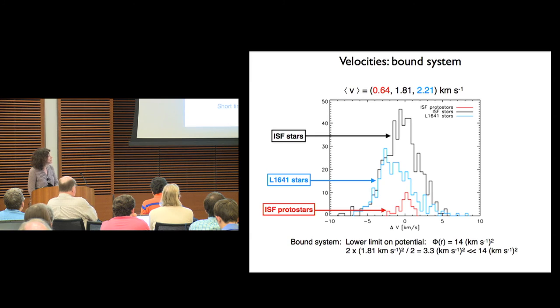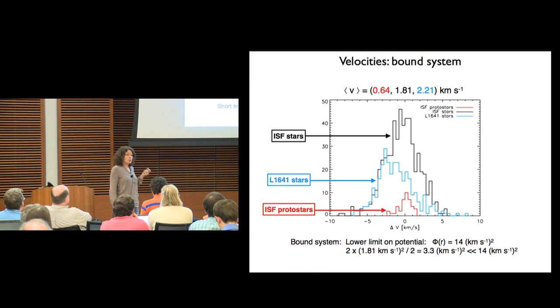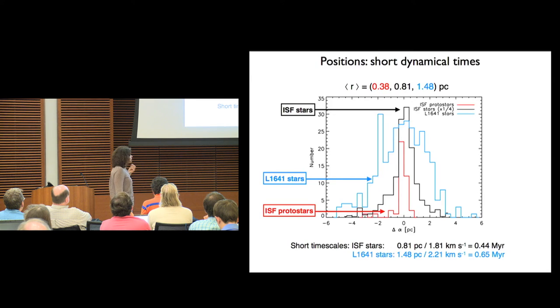When we combine these velocities with the positional offsets, we can get dynamical timescales. What we find is that the dynamical timescales for the stars are quite short, about 0.4 and 0.6 million years for the northern and southern portion, respectively.